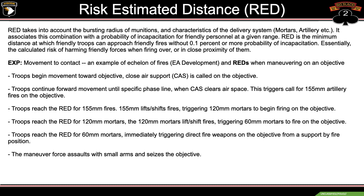Example — Movement to Contact: an example of echelon fires, engagement area development, and REDD when maneuvering on an objective. Step 1: troops begin movement toward an objective while close air support is called on the objective. Step 2: troops continue forward movement until a specific phase line when close air support clears the airspace, triggering a call for 155 artillery fires on the objective. Troops reach the REDD for 155-millimeter fires; 155s lift and shift their fires, triggering 120 mortars to begin firing on the objective. Troops reach the REDD for 120 mortars; 120 mortar fires lift or shift, triggering 60-millimeter mortars to fire on the objective. After troops reach the REDD for 60-millimeter mortars, direct fire weapons engage the objective from a support-by-fire position. The maneuver force assaults with small arms and seizes the objective.